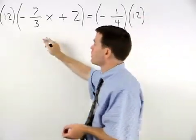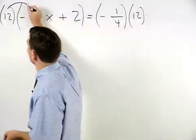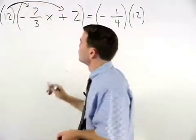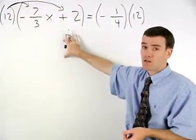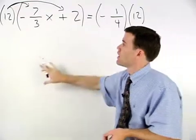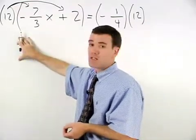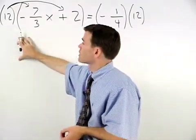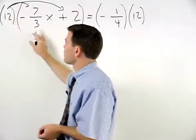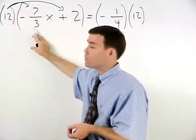On the left, make sure you distribute the 12 through both terms inside the parentheses. And when multiplying 12 times negative 7 thirds x, the 12 and 3 reduce to 4 and 1.